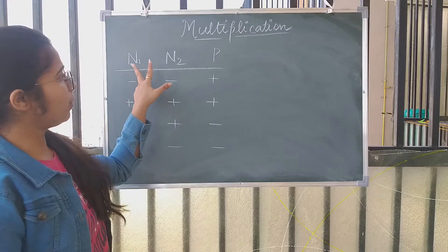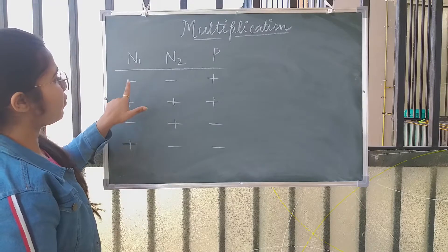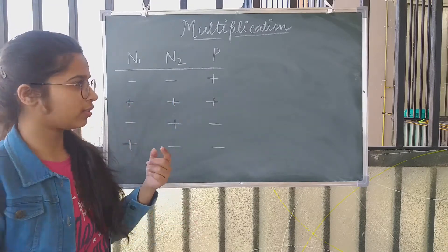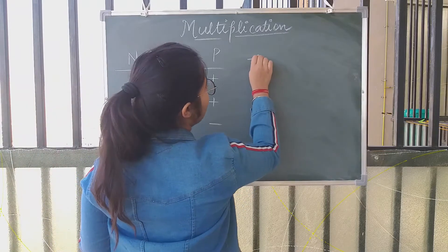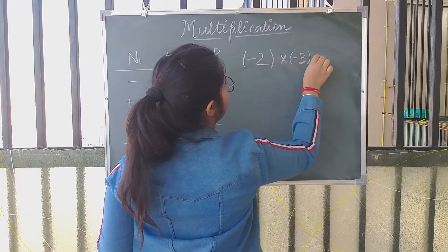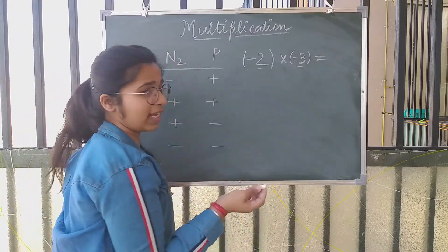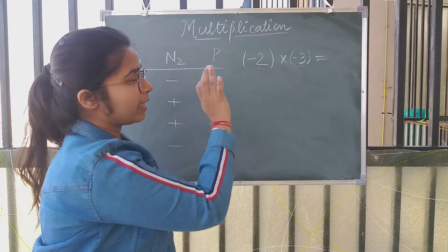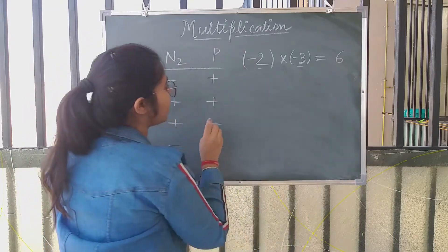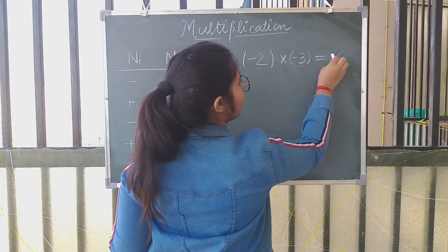You multiply these numbers and there is a product P. If both numbers have a negative sign, the product will be of positive sign. That means, if I multiply minus 2 with minus 3, I just multiply them as whole numbers — leave the signs. So, 2 into 3 is 6 and the answer will be positive. Minus into minus gives you plus.